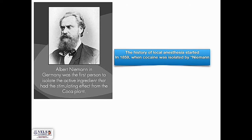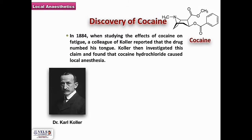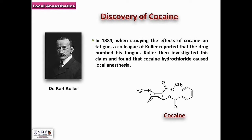The history of local anaesthesia started in 1859 when cocaine was isolated by Niemann from the coca plant. In 1884, while studying the effects of cocaine on fatigue, a colleague of Kohler reported that the drug numbed his tongue. Karl Kohler then investigated this claim and found that cocaine hydrochloride caused local anaesthesia. Kohler went on to use cocaine hydrochloride as a local anaesthetic agent in an ophthalmologic surgery in 1884.